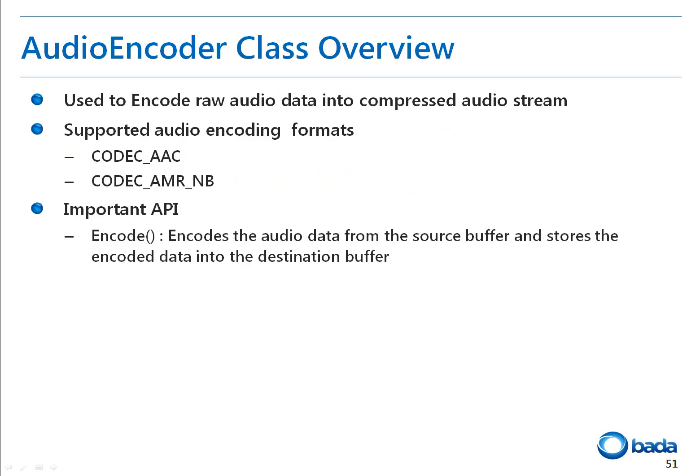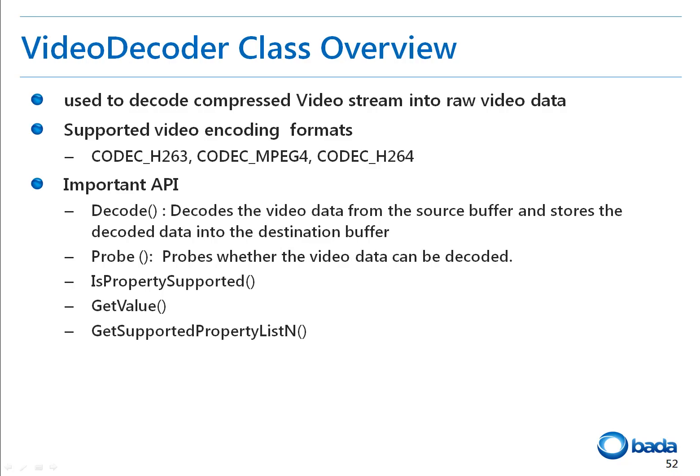The audio encoder facilitates encoding of raw PCM audio data to compressed audio stream format AAC or AMR-NB. The encode method encodes audio data from the source buffer and stores the encoded data in the destination buffer. The video decoder class is used to decode compressed H.264, H.263, and MPEG-4 streams to raw data — specifically the YUV420 data format. All APIs of the video decoder class are asynchronous. The Probe API queries input encoded data properties such as width, height, and pixel format. The decode method decodes video data from the source buffer and stores the decoded data in the destination buffer.